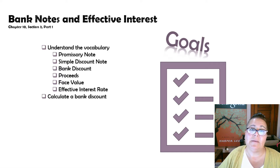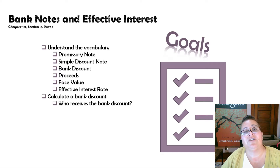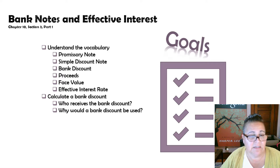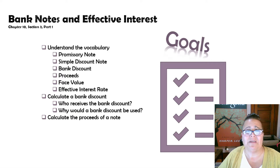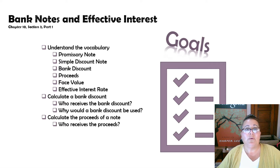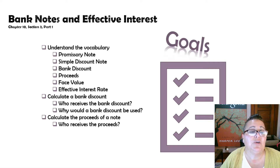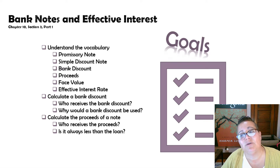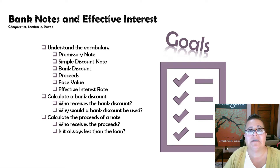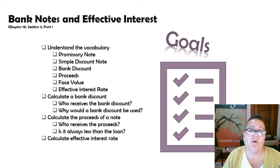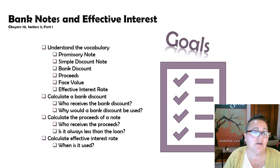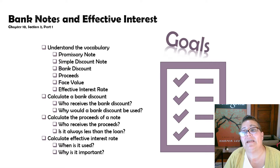We're going to have you calculate a bank discount. We want you to know who would receive it and how it would be used, and why someone would use a bank discount. We want you to calculate the proceeds on a note, understand who receives the proceeds, and whether it is always less than the loan amount. And then we're going to have you calculate the effective interest rate and understand when it is used and why it is important.